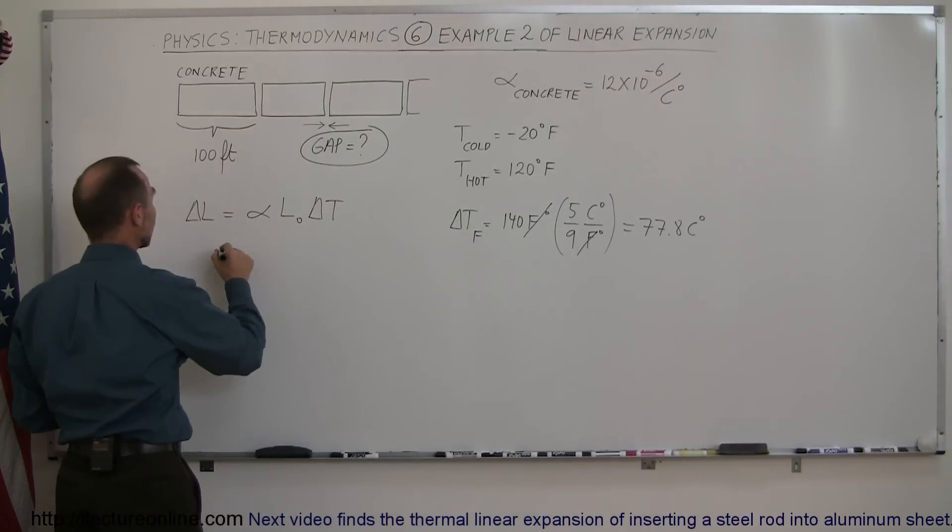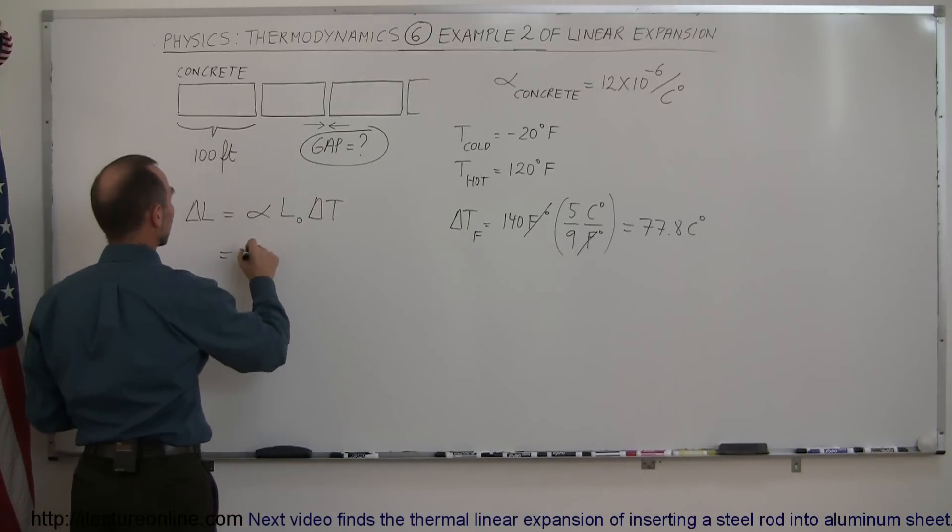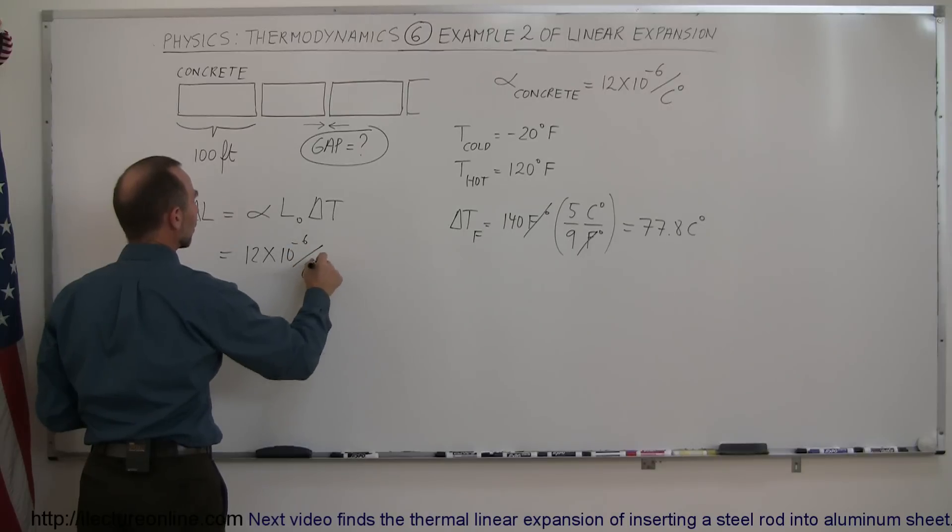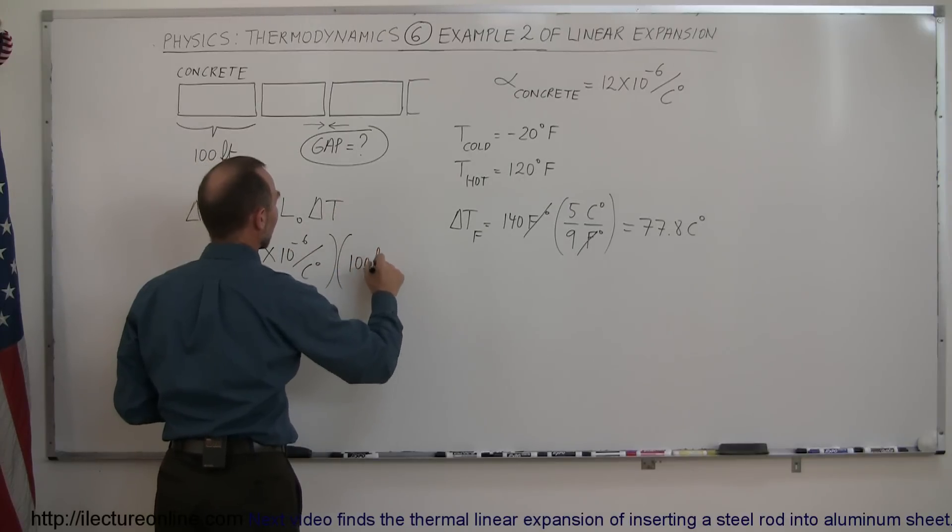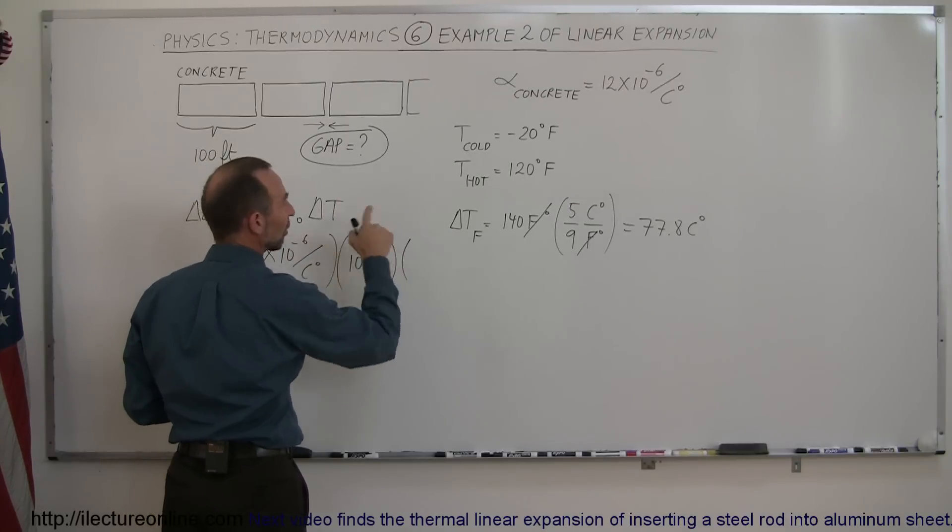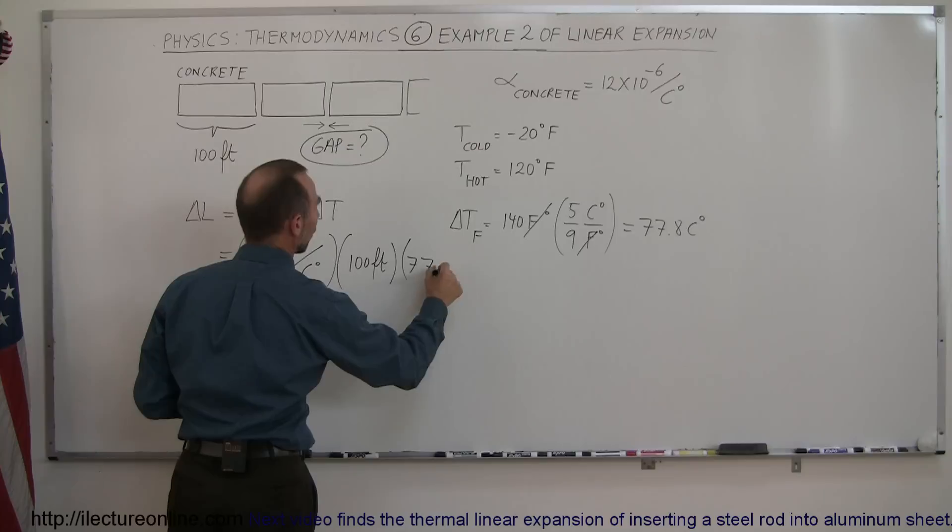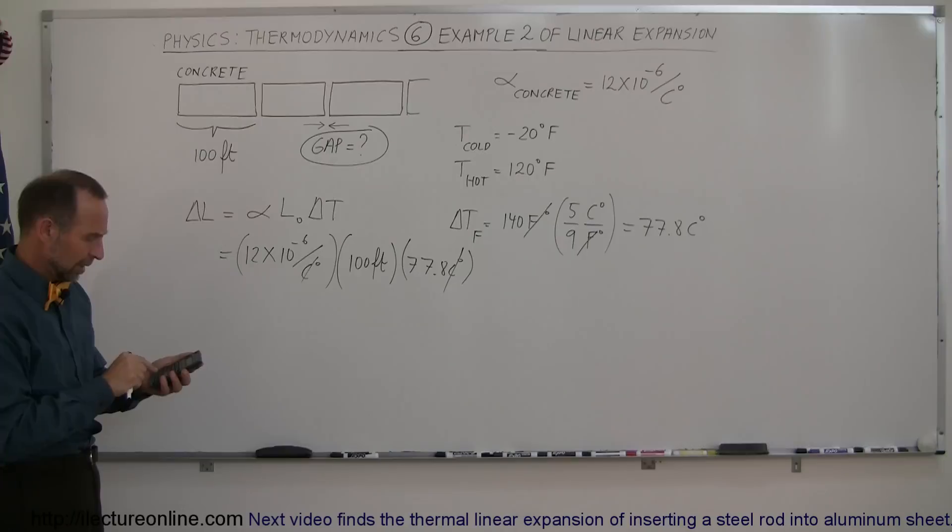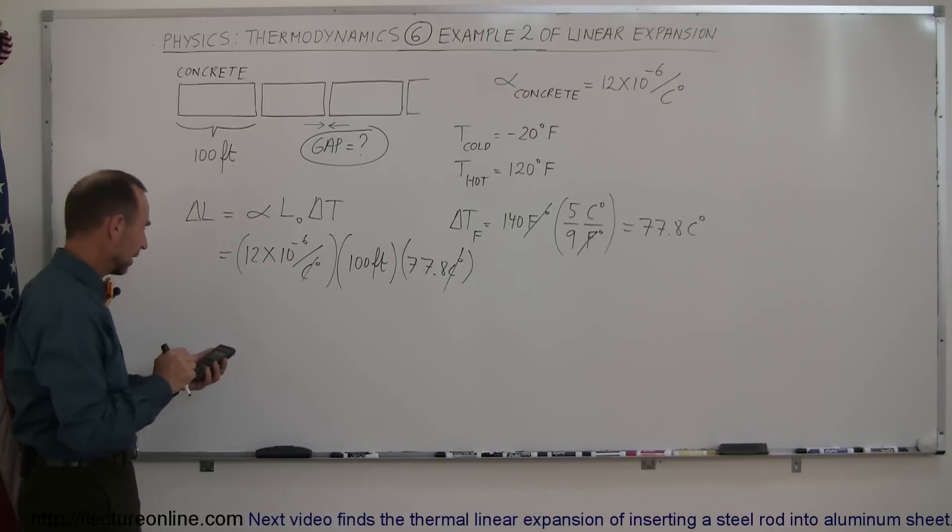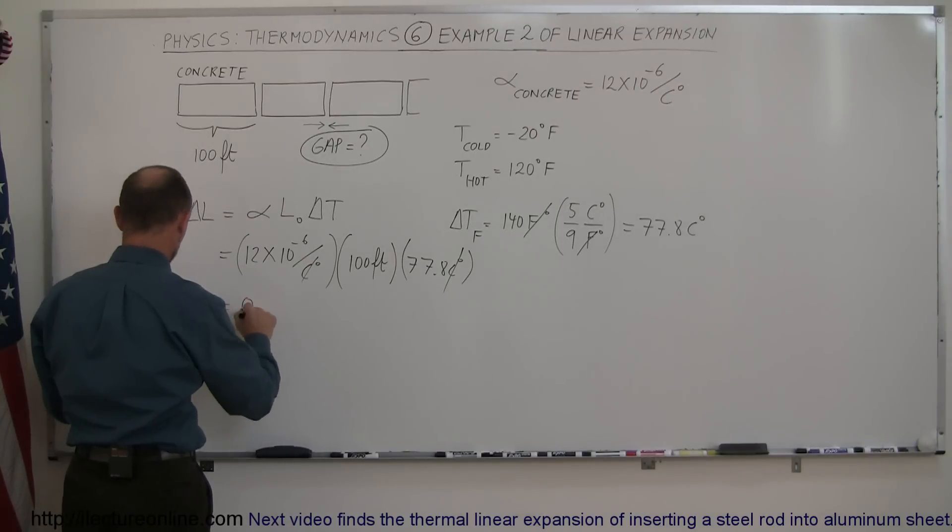Now let's plug all that in here. So the alpha, the coefficient of linear expansion for concrete, is 12 times 10 to the minus 6 per centigrade degree. The original length was 100 feet, and the change in the temperature was 77.8 centigrade degrees. This cancels out with that, so times 100 and times 12 times 10 to the minus 6 equals, and so this is equal to 0.09 feet.